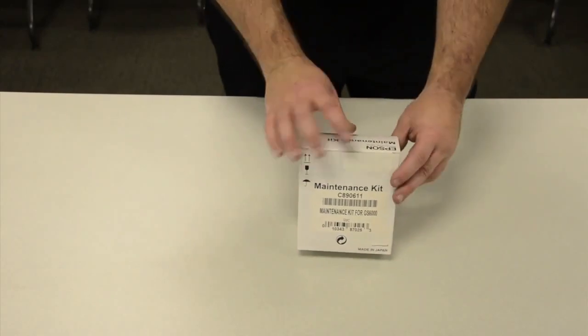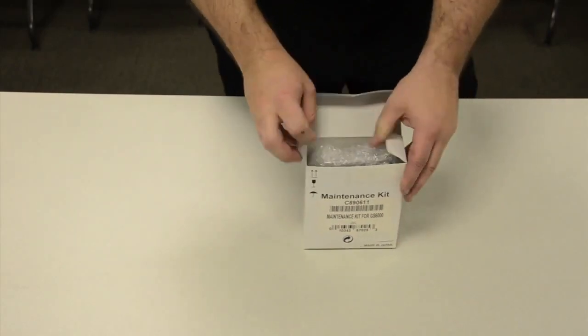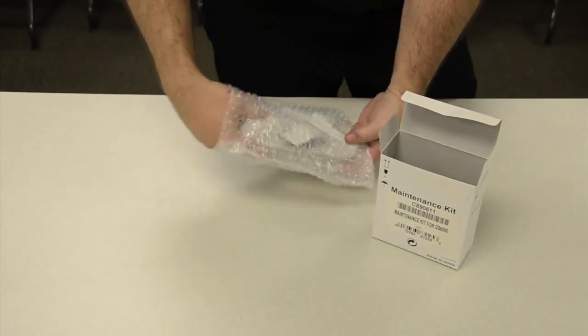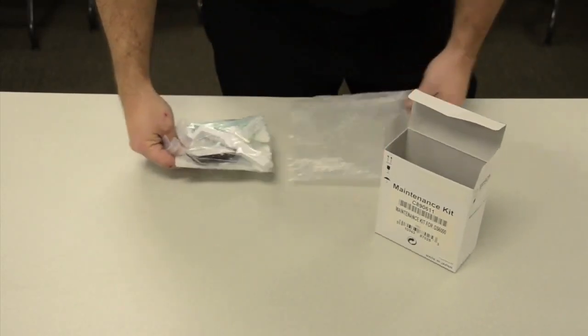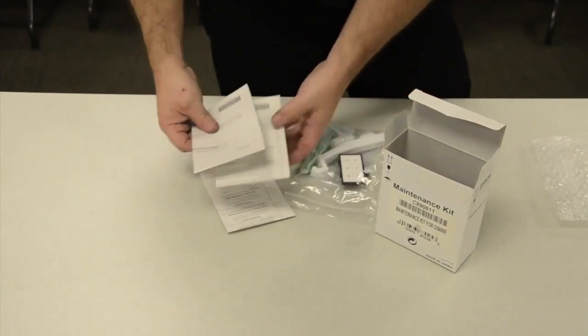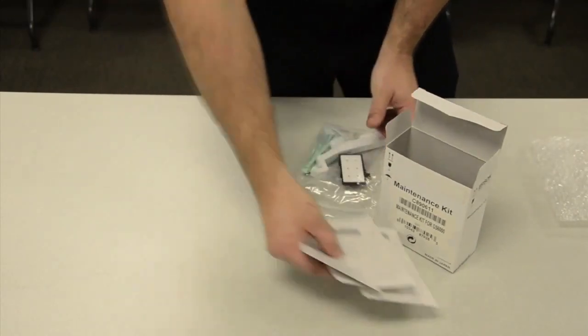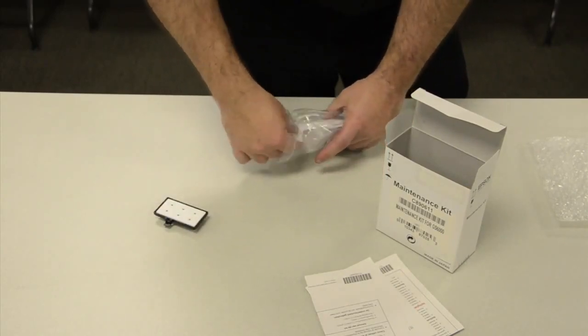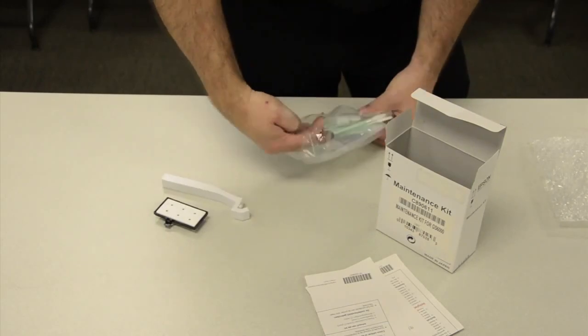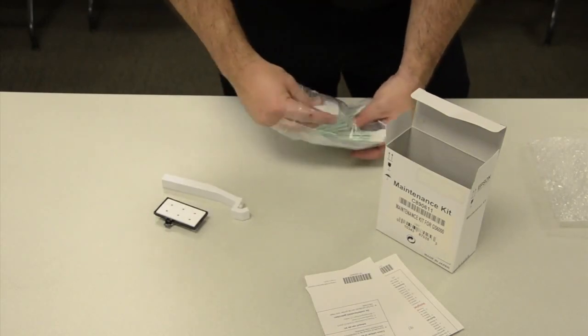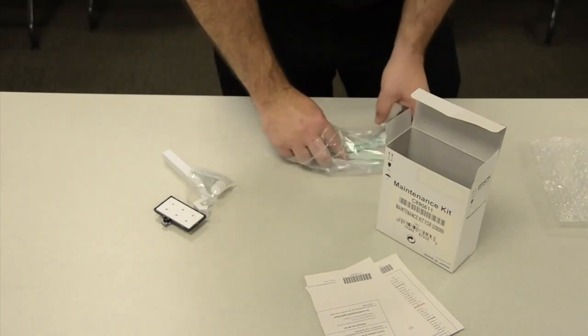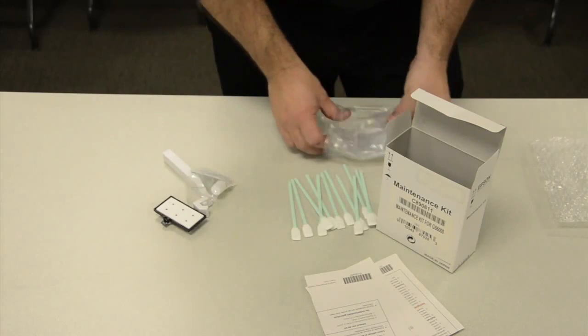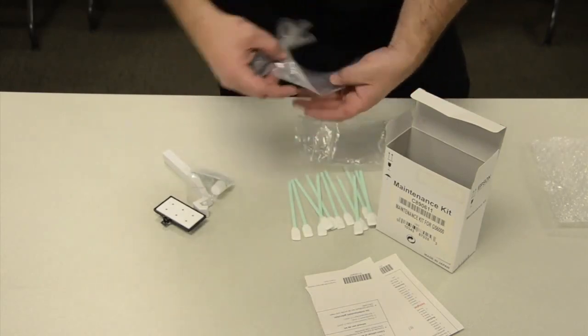One of the first steps in cleaning the print head is arranging your supplies. The first thing you will need is the maintenance kit, part number C890611. In this maintenance kit, you will find the instructions and specifications for the supplies that are contained. You will find a flushing pad, a carriage rail tool, carriage rail oil, and approximately ten foam tip swabs that are used to clean the print head, and also a set of plastic gloves.